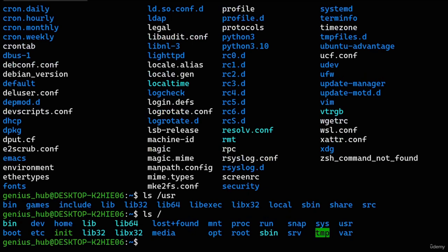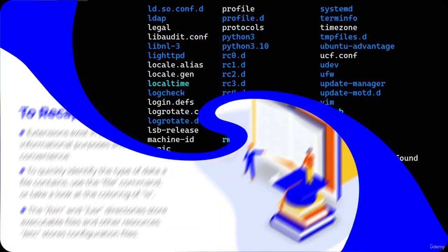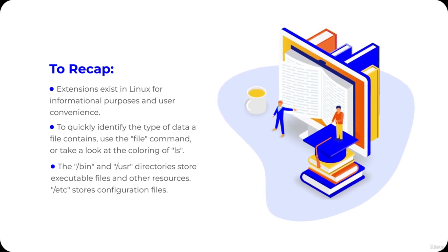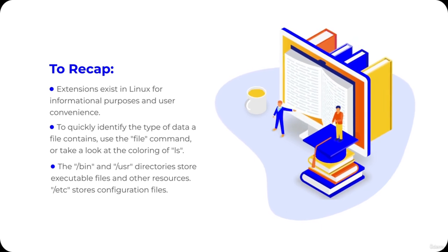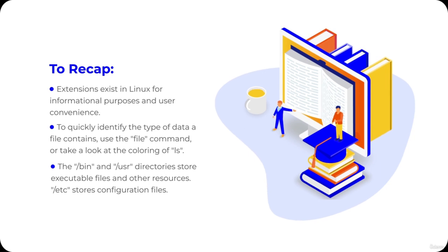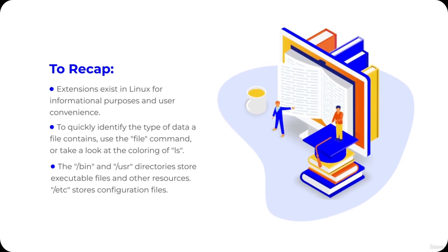One key point: we don't want you to spend time trying to memorize all this information. What we want is for you to have an idea of what the purpose of these directories is — as you continue to use the command line, everything will come naturally. Here's a recap: extensions exist in Linux for informational purposes only; the 'file' command or 'ls' coloring can quickly identify file types; /bin and /usr store executables; and /etc stores configuration files.